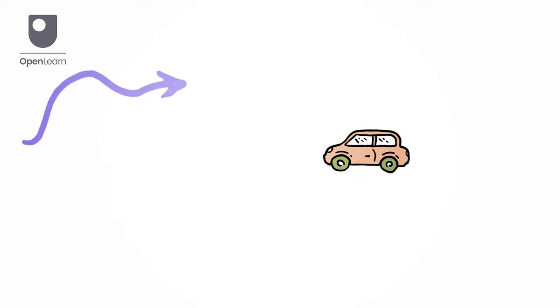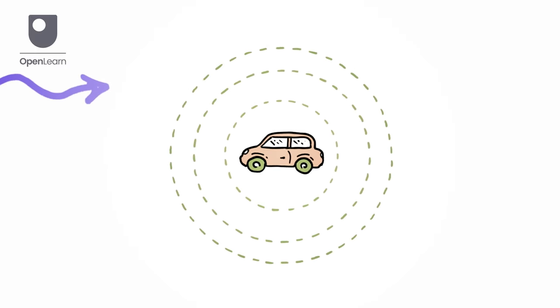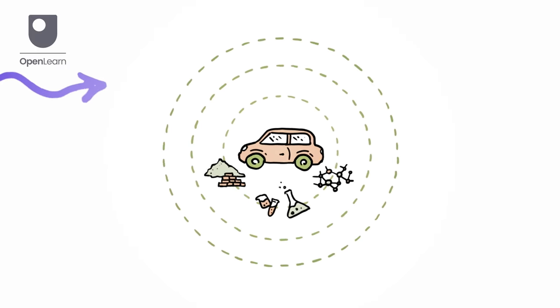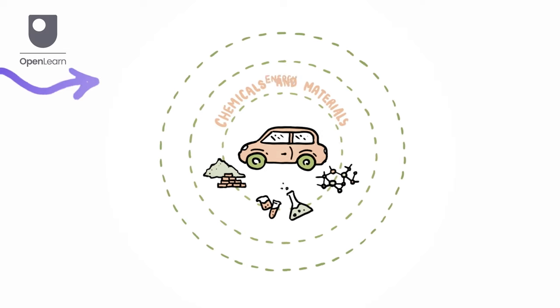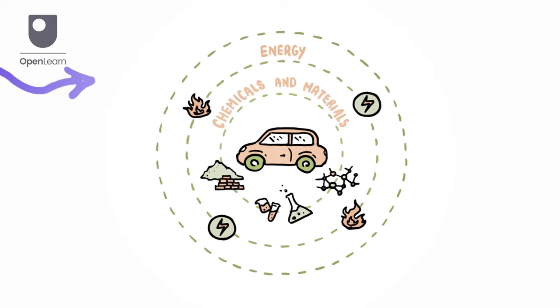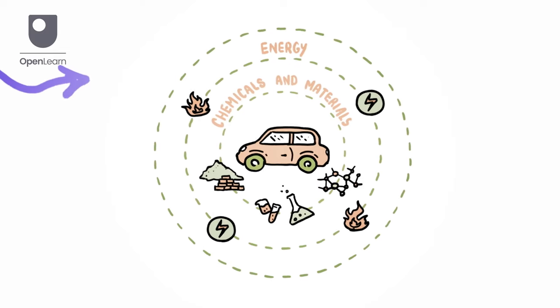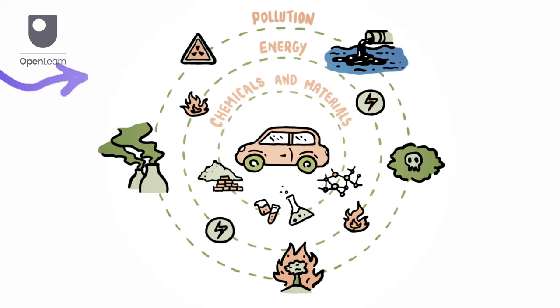A product is a part of a wider system and every product has an impact caused by the chemicals and materials it's made from, the energy needed to manufacture, distribute, use and dispose of it, and the pollution generated across its life.